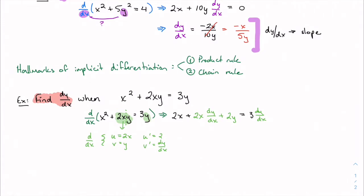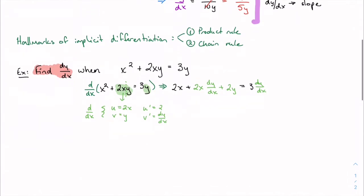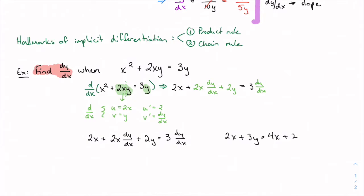That completes the implicit differentiation step. Now I need to actually find dy/dx, so I rearrange. Copying the equation: 2x plus 2x dy/dx plus 2y plus 3 dy/dx. We treat this like algebra — just as you'd collect all x terms in an equation like 2x plus 3y equals 4x plus 2, subtract and divide. Same idea applies here: collect all the dy/dx terms.